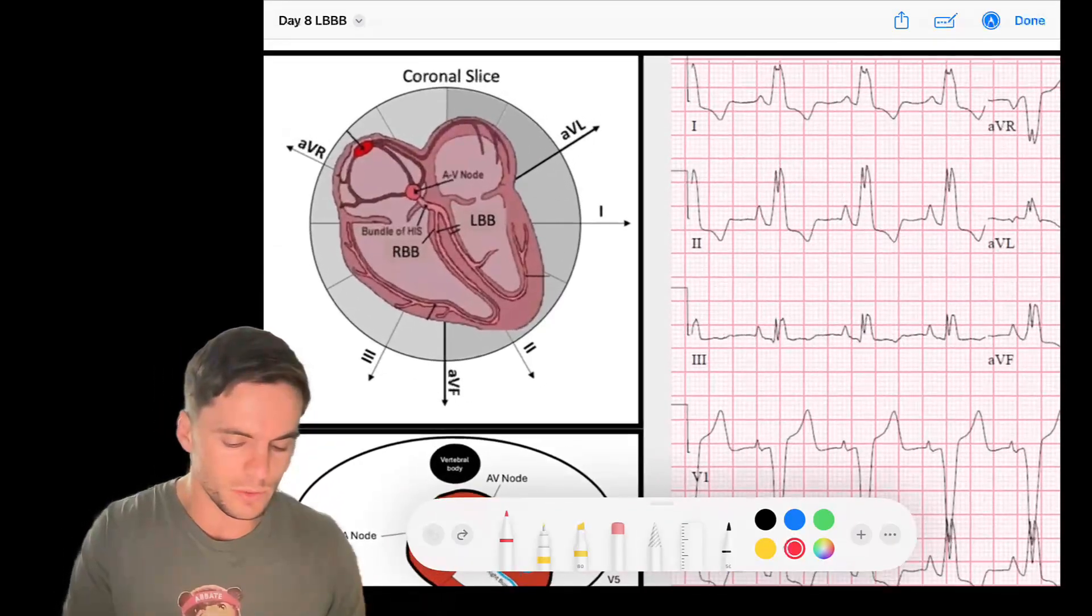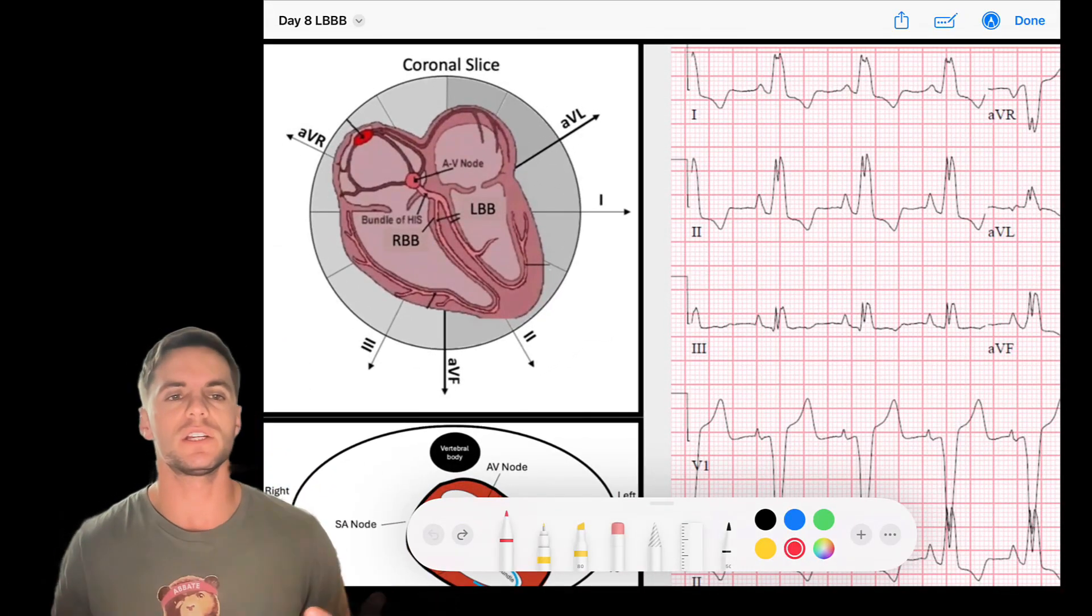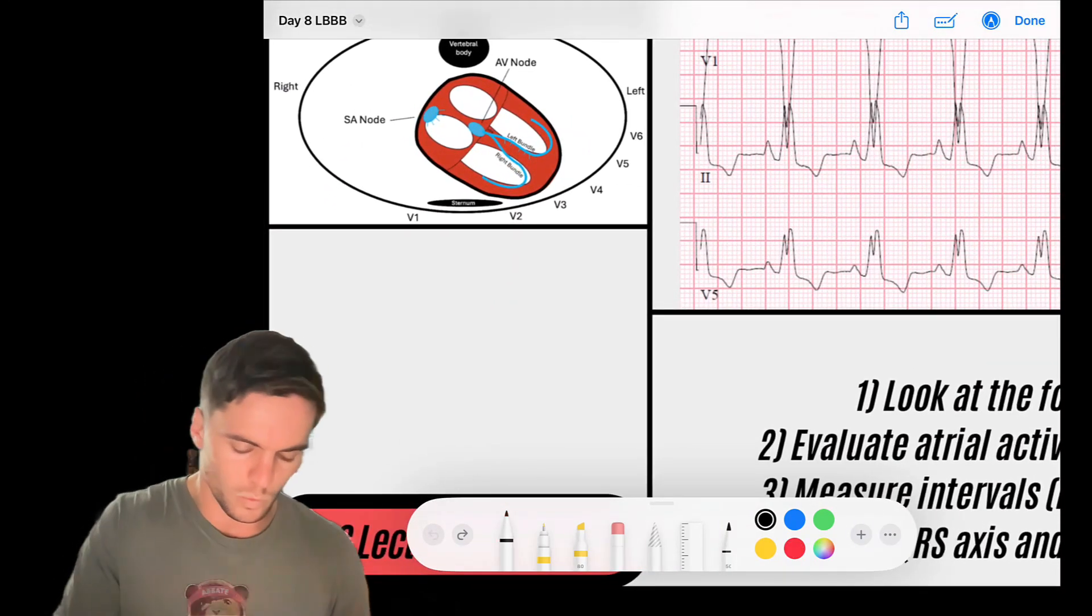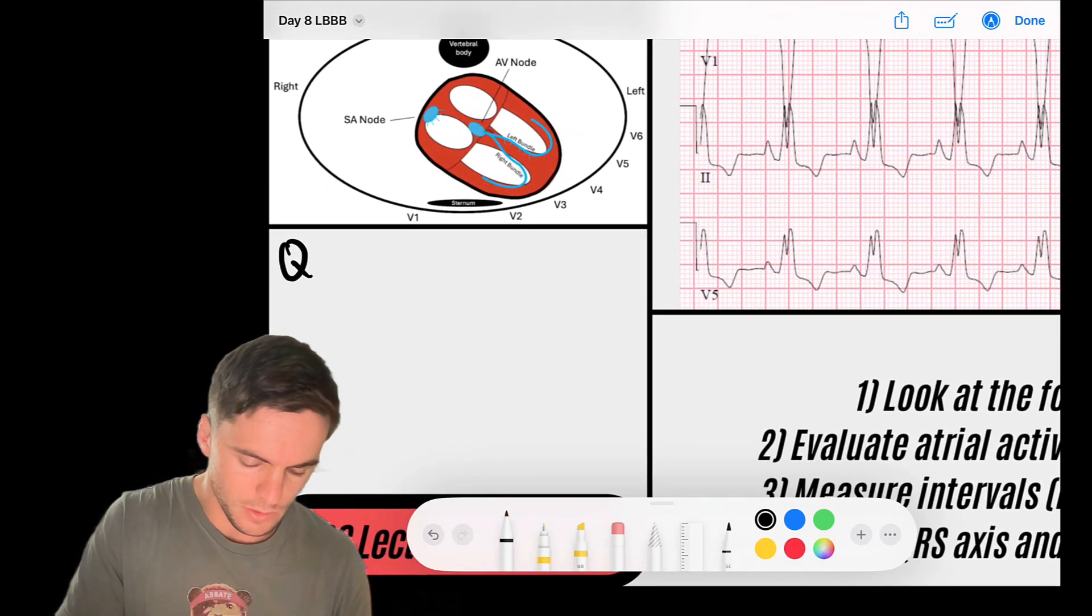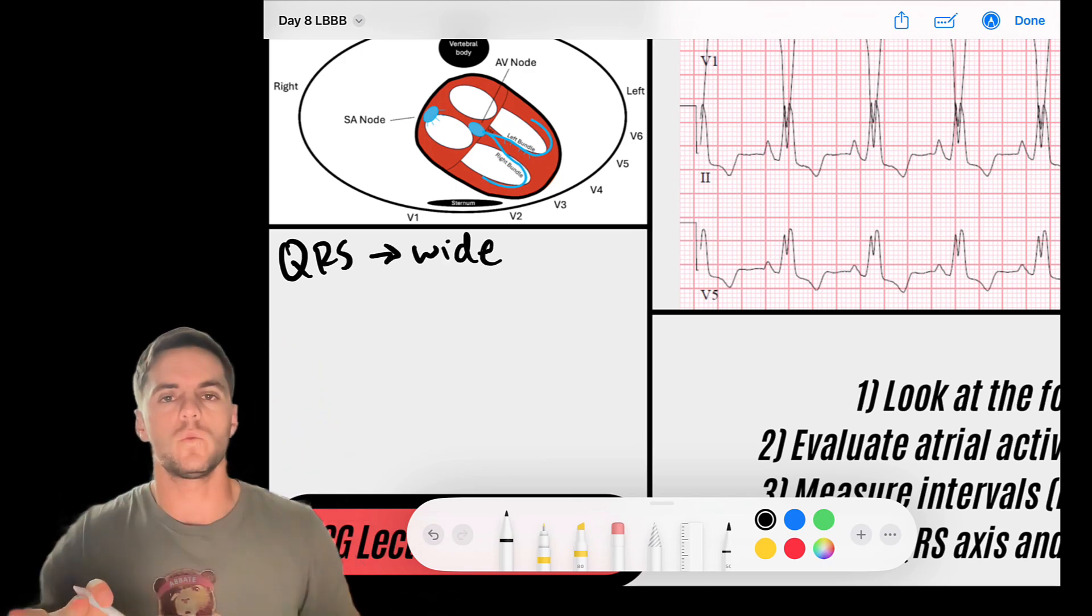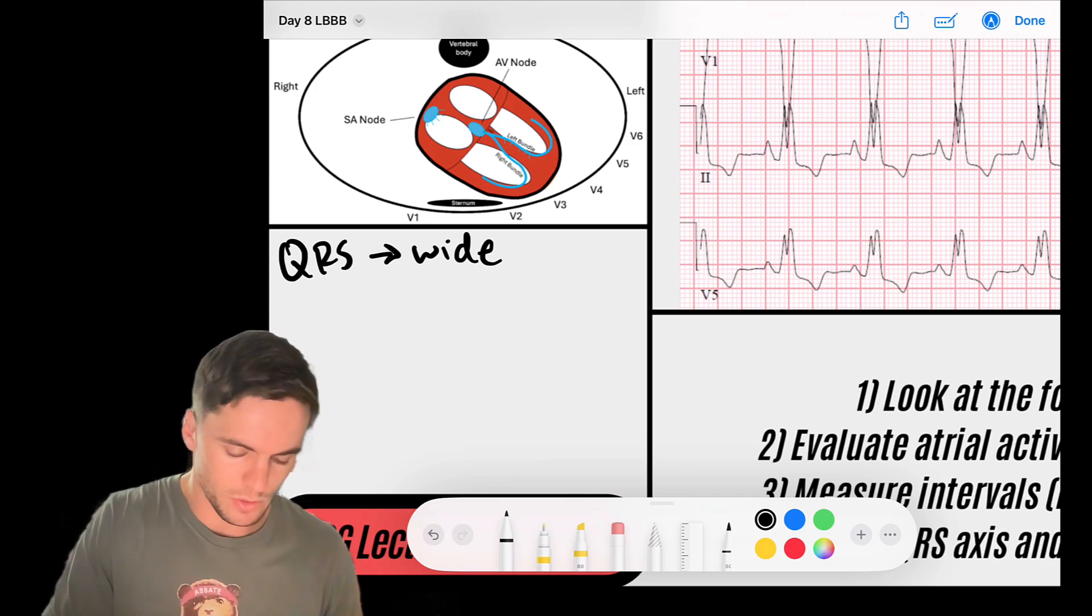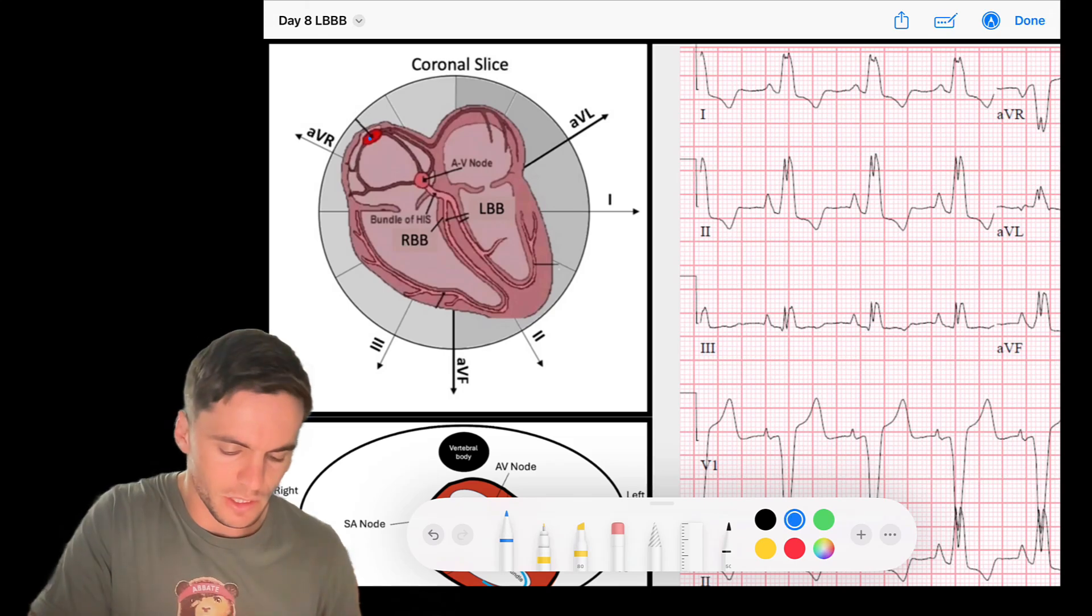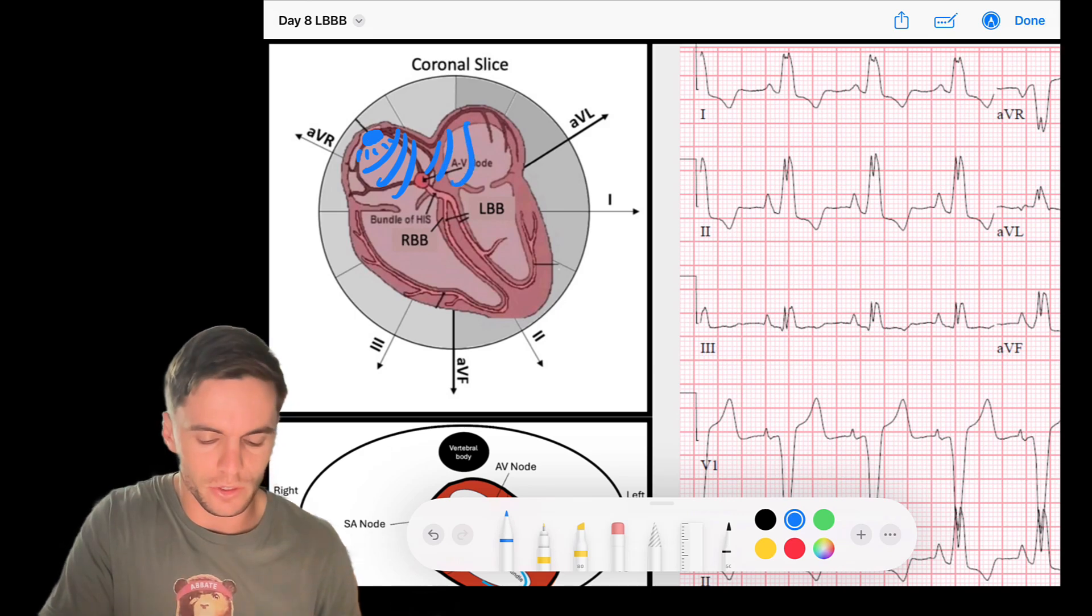First, the concept I want to bring to your attention with a bundle branch block is we look for bundle branch blocks when the QRS is wide but when the sinus node is driving the rhythm. So what does that mean? We know that when the sinus node beats, when my sinus node fires off, it drives our rhythm. It's the pacemaker node of the cell and that generates our P wave.